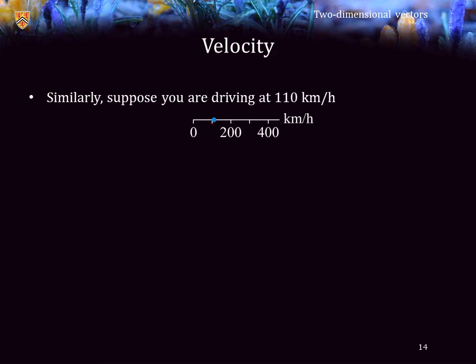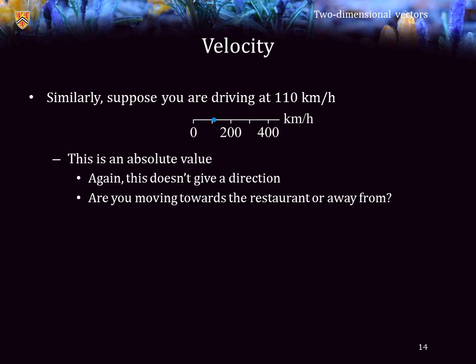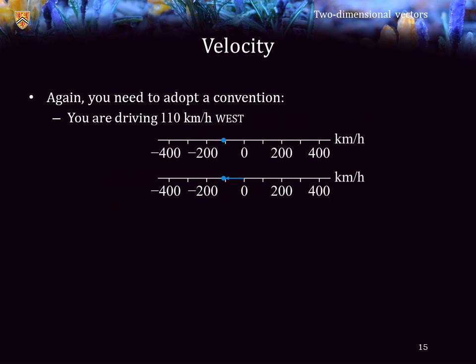Similarly, suppose I'm driving at 110 kilometers per hour. Again, that is an absolute value and therefore does not indicate whether or not I'm moving towards the restaurant or away from the restaurant. To give spatial information, I need a velocity. Am I moving west or east? In this case, I need to adopt that a positive number is a velocity moving towards the east. A negative number is going to be moving west. So in this case, my velocity would be represented as negative 110. This is relative to not moving at all or zero kilometers per hour.